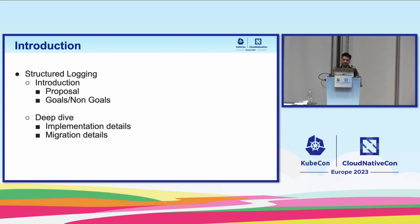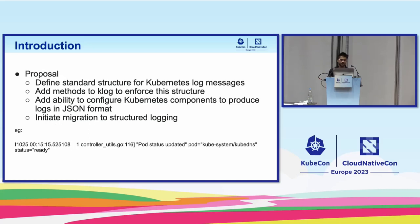We have divided this into two parts: structured and contextual. The proposal around structured logging is to define a standard structure for Kubernetes log messages, which doesn't exist at the moment. We add methods to the native Kubernetes logger, klog, to enforce this structure, and add the ability to configure Kubernetes components to produce logs in JSON format. We chose JSON because it's a key-value pair format — the easiest way to get structured logs. At the end, we initiate migration of the current codebase to structured and contextual logging.